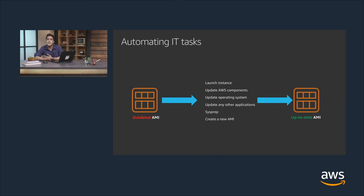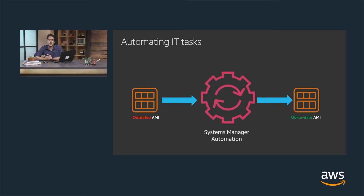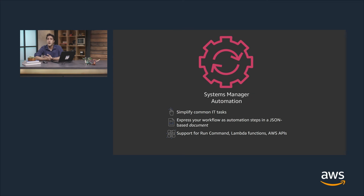Next, we want to talk about automating IT tasks. Consider creating golden images as an example. The steps involve launching a new instance from a previous AMI, updating AWS components like drivers, updating the Windows OS and applications, optionally doing a sysprep, and creating an image. AWS Systems Manager Automation simplifies common IT tasks like this. With Automation, you can express your workflow in JSON or YAML-based documents, supporting different tasks ranging from Systems Manager Run Command to Lambda functions and AWS API calls.